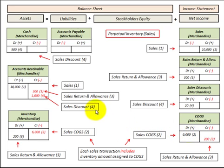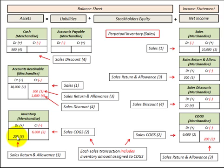Now let's say we had a sales return — a customer returns $300 of merchandise. We reduce accounts receivable by $300 and debit sales returns and allowances for $300. We also have to account for it in the inventory account: the cost basis for that returned material was $200, so we debit inventory to increase it by $200 and decrease cost of goods sold by $200.